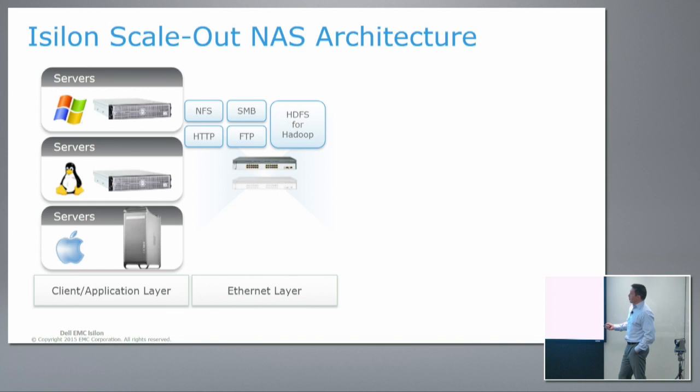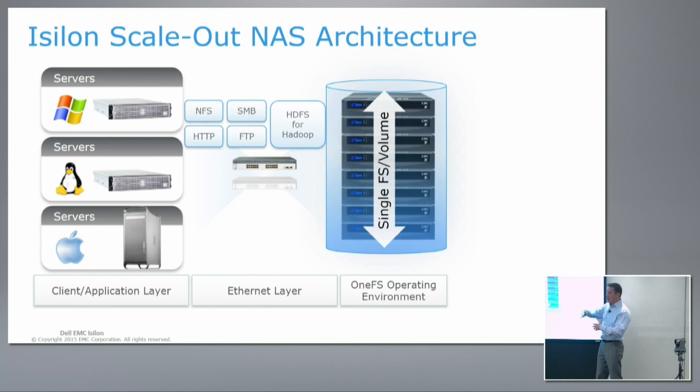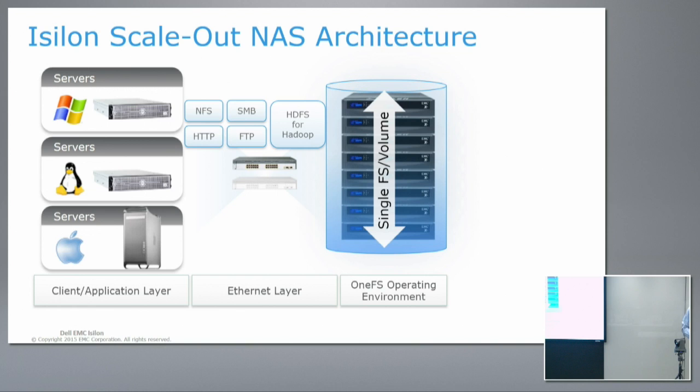In terms of the architecture: multi-protocol, single volume, single namespace. There's no concept of disk management, volume management, aggregate management, or RAID group creation in an Isilon world. None of that happens. You'll see that in a lot of competitive products. There's just one file system — we automatically create it and expand across nodes.